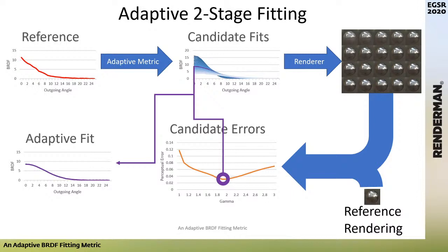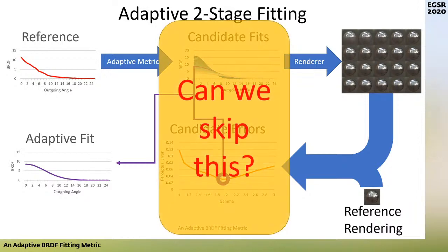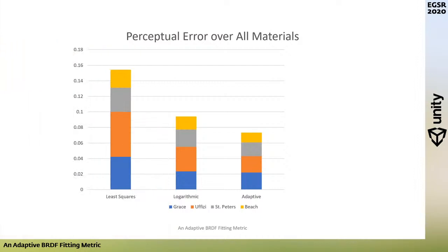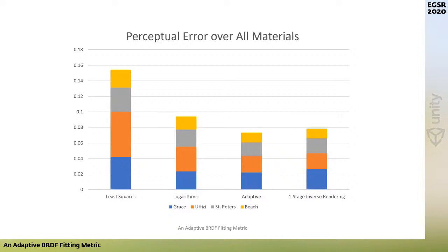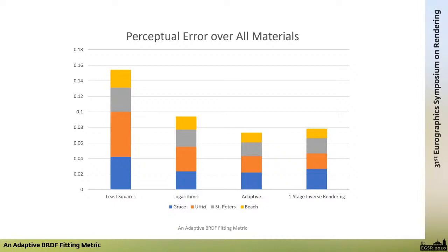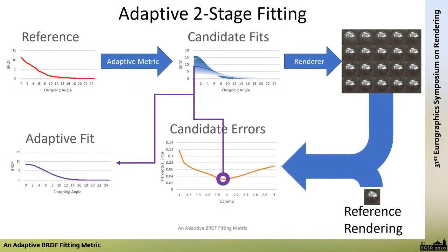Another question: is the two-stage process worth doing? Can we skip it and optimize image space directly? Here we have cumulative perceptual errors over four evaluation light probes for each of the three fitting metrics. Optimizing BRDF parameters using inverse rendering on our selection scene leads to overfitting to the lighting — higher errors on average for other lighting conditions than our adaptive fitting metric.